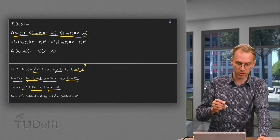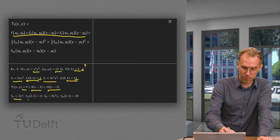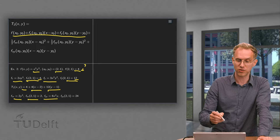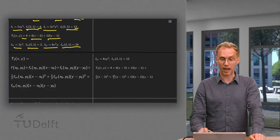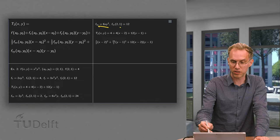Moving on to the second order. We need fxx equals 2y³. At the point (2,1), that's just 2. fyy equals 6x²y. At the point that equals 24. And we also need the mixed derivative: fxy equals 6xy. At the point equals 12.